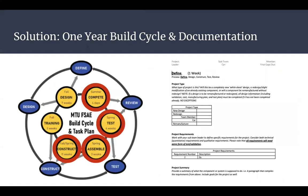Our solution is the one year build cycle and documentation. On the left hand side of your screen you'll see our one year build cycle circle. This build cycle is new to us this year. In previous years we used to use a three year build cycle which halted the team in its ability to improve the car from one year to the next.